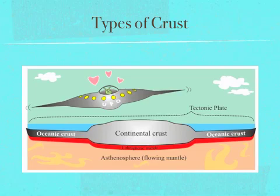This image shows how the oceanic crust and the continental crust compare in size, and how they both kind of float on the asthenosphere.